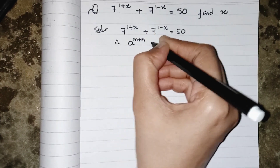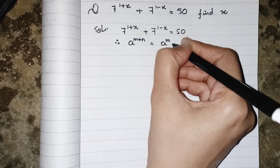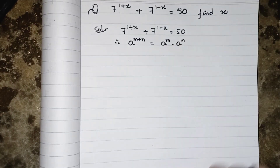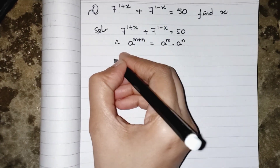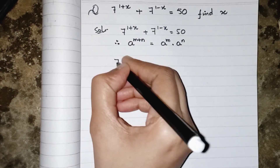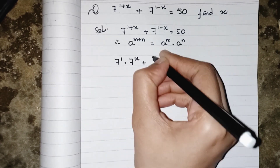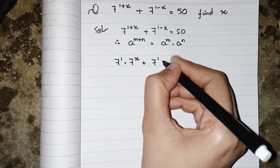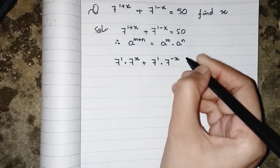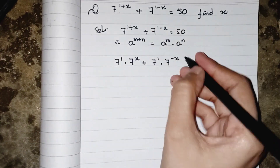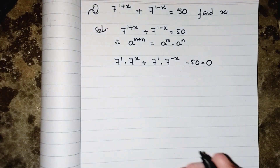The law says whenever a base has two different powers, it should be separately given to the same base and both will be multiplied. So doing the same thing here: 7's power 1 multiplied by 7's power x, plus 7's power 1 multiplied by 7's power minus x, and this becomes minus 50 equals to 0.